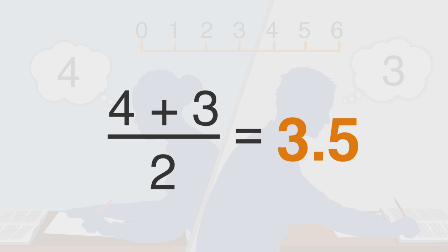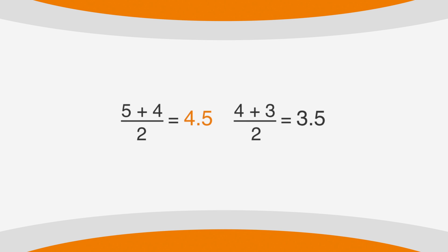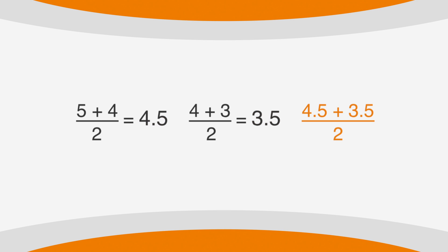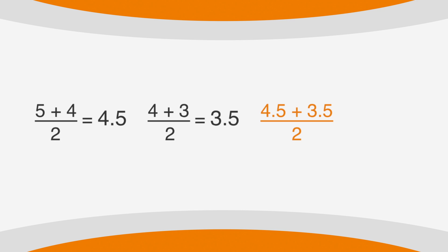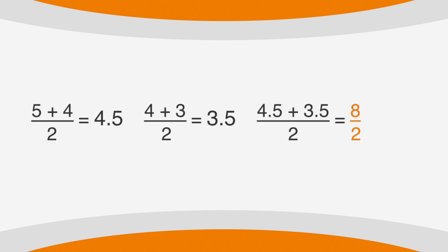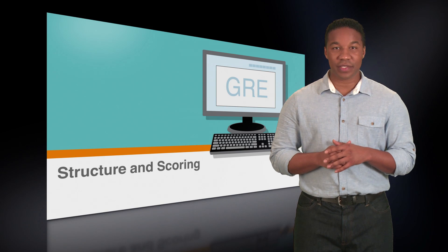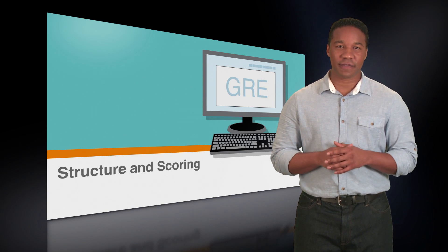The two scores are averaged, so for a little bit of math practice, that's 4.5 plus 3.5 divided by 2. We get 8 over 2, or a final score of 4.0. The final score is the only score sent to schools. Also remember that since real, live graders score the Analytical Writing section, you won't get the results for a few weeks.